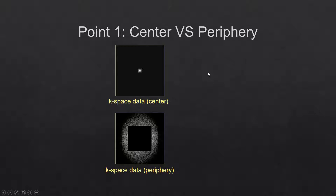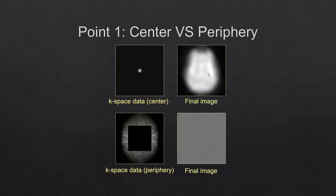When we apply this to most MR images, it's slightly difficult to appreciate why this is significant. You can see here we've just got the center, and we really just have contrast and not much edge detail. And here we have the periphery — we don't have much contrast, but we do have some edge definition.